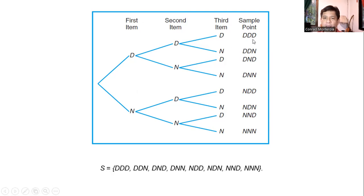So these are the sample points. DDD, DDN, DND. So as you can see, you just follow the line. D, N, N. Here is D and N. NDD. NND. NDN. And finally, NNN, non-defective. All of the three items are non-defective. So if you're going to list the possible outcomes, you will have eight possible outcomes.